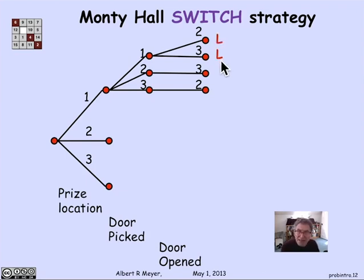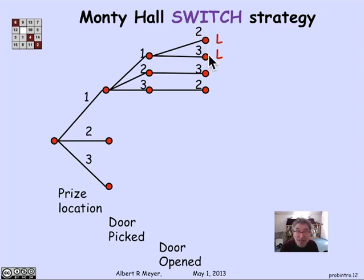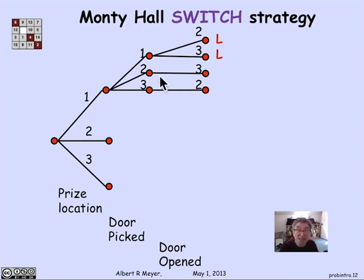If we look at the classification of these outcomes according to winning and losing under the switch strategy: if the prize was behind one and the contestant picked door one initially, their strategy is to switch away from the prize door. So whichever door Carol opened, the contestant is going to switch to the other one, and they're going to lose. Both of these outcomes count as losses. On the other hand, if the prize was behind door one and the contestant picked door two, Carol opens door three, and the contestant switches to door one - the prize door. They win. And this other case is symmetric. That summarizes the wins and losses in this branch of the tree.